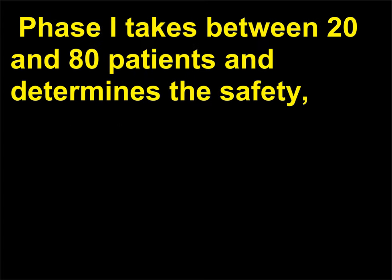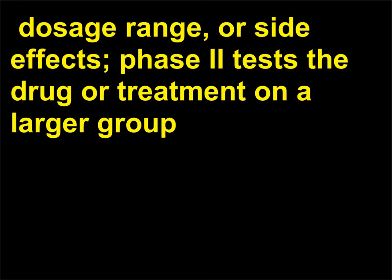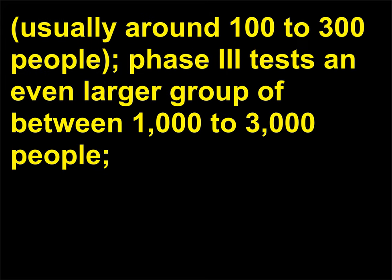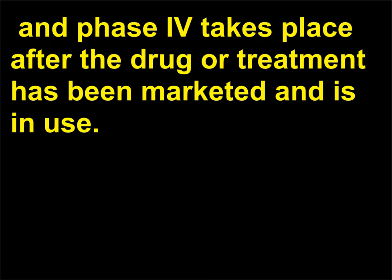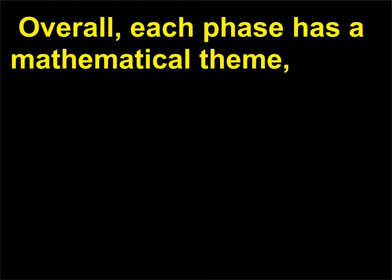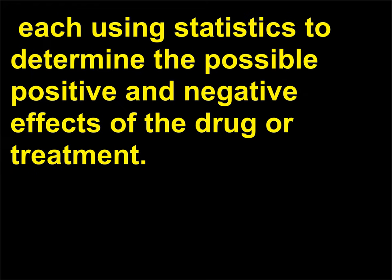Phase I takes between 20 and 80 patients and determines the safety, dosage range, or side effects. Phase 2 tests the drug or treatment on a larger group, usually around 100 to 300 people. Phase 3 tests an even larger group of between 1,000 to 3,000 people. Phase 4 takes place after the drug or treatment has been marketed and is in use. Each phase has a mathematical theme, using statistics to determine the possible positive and negative effects.